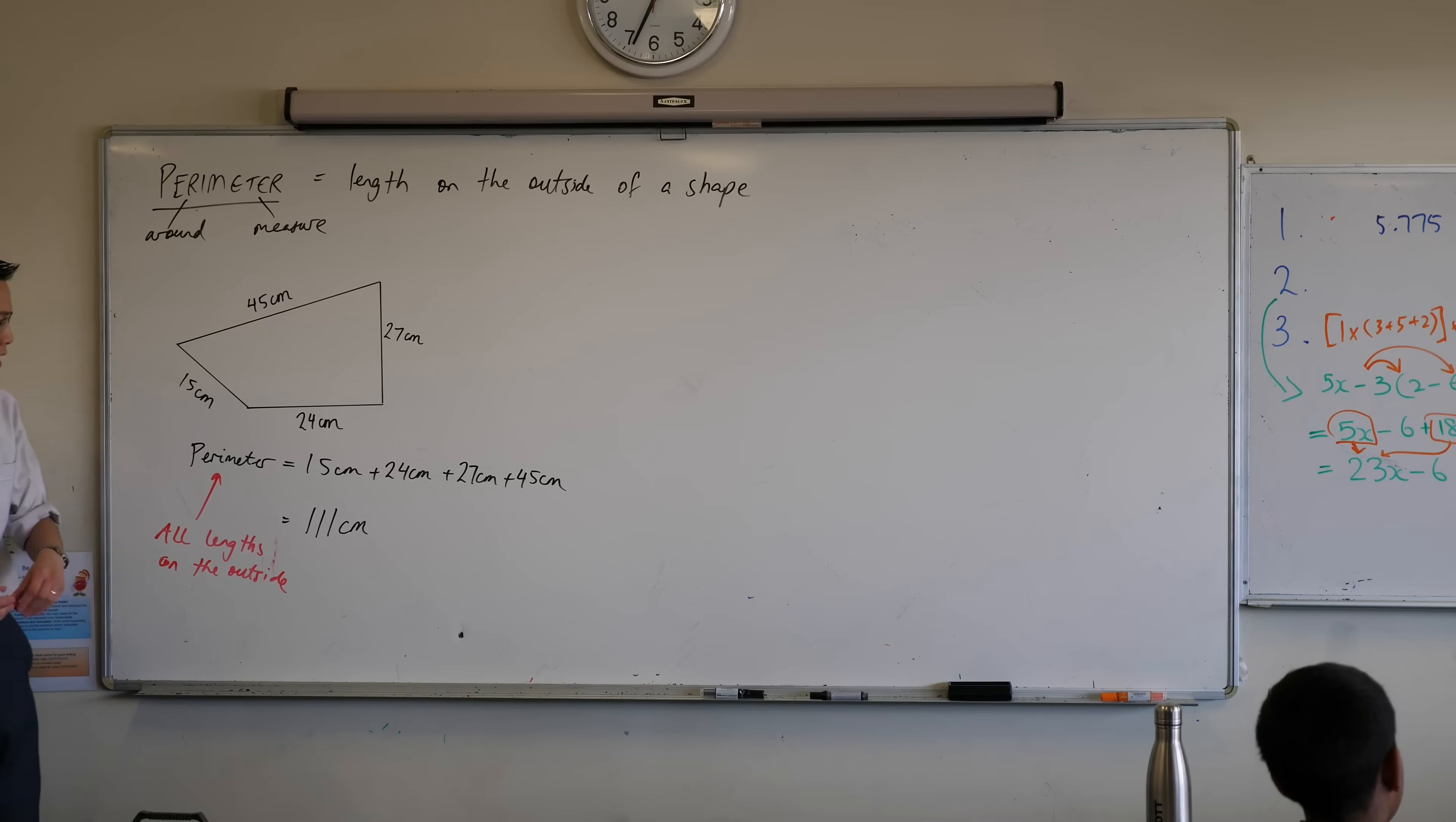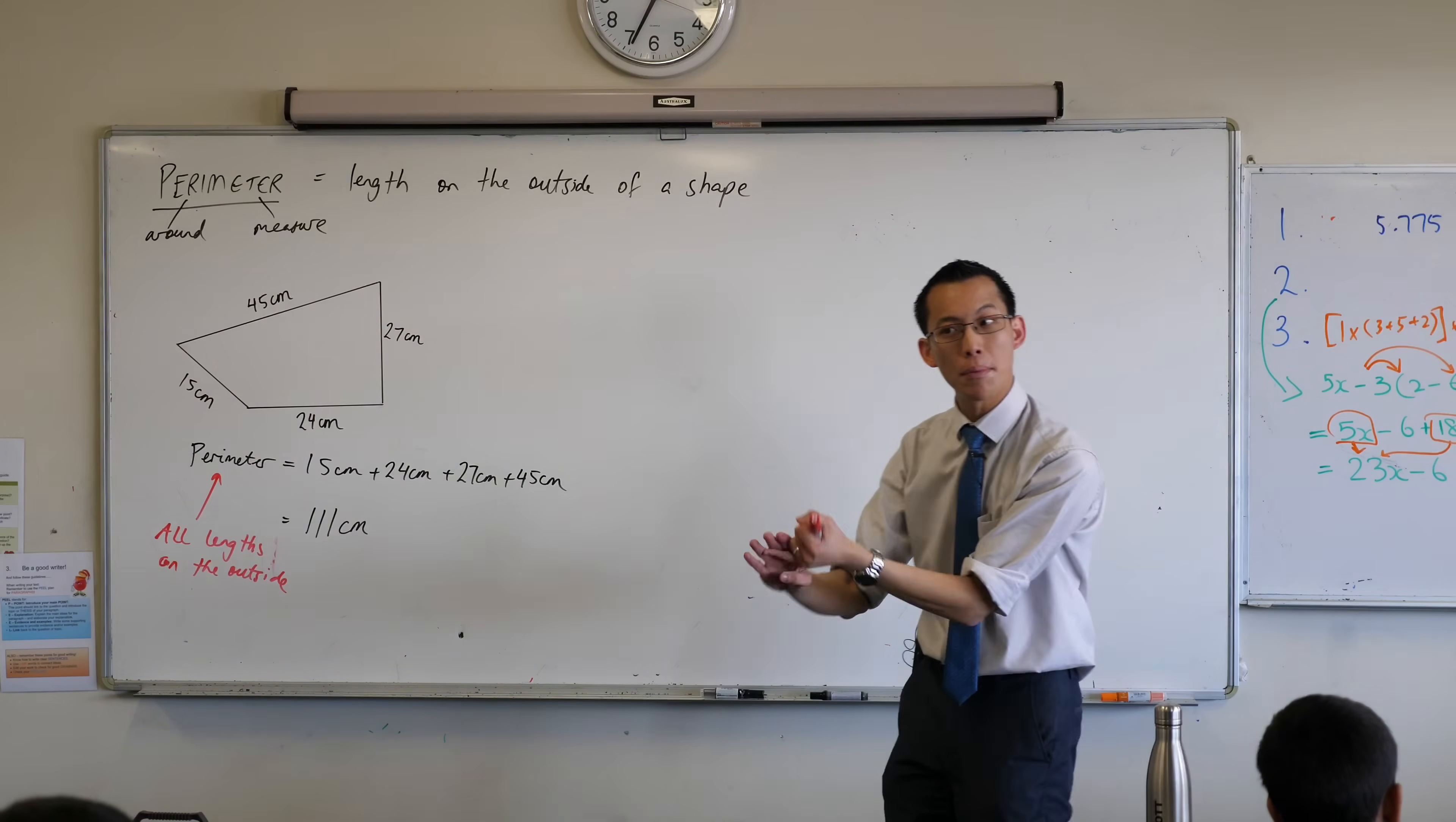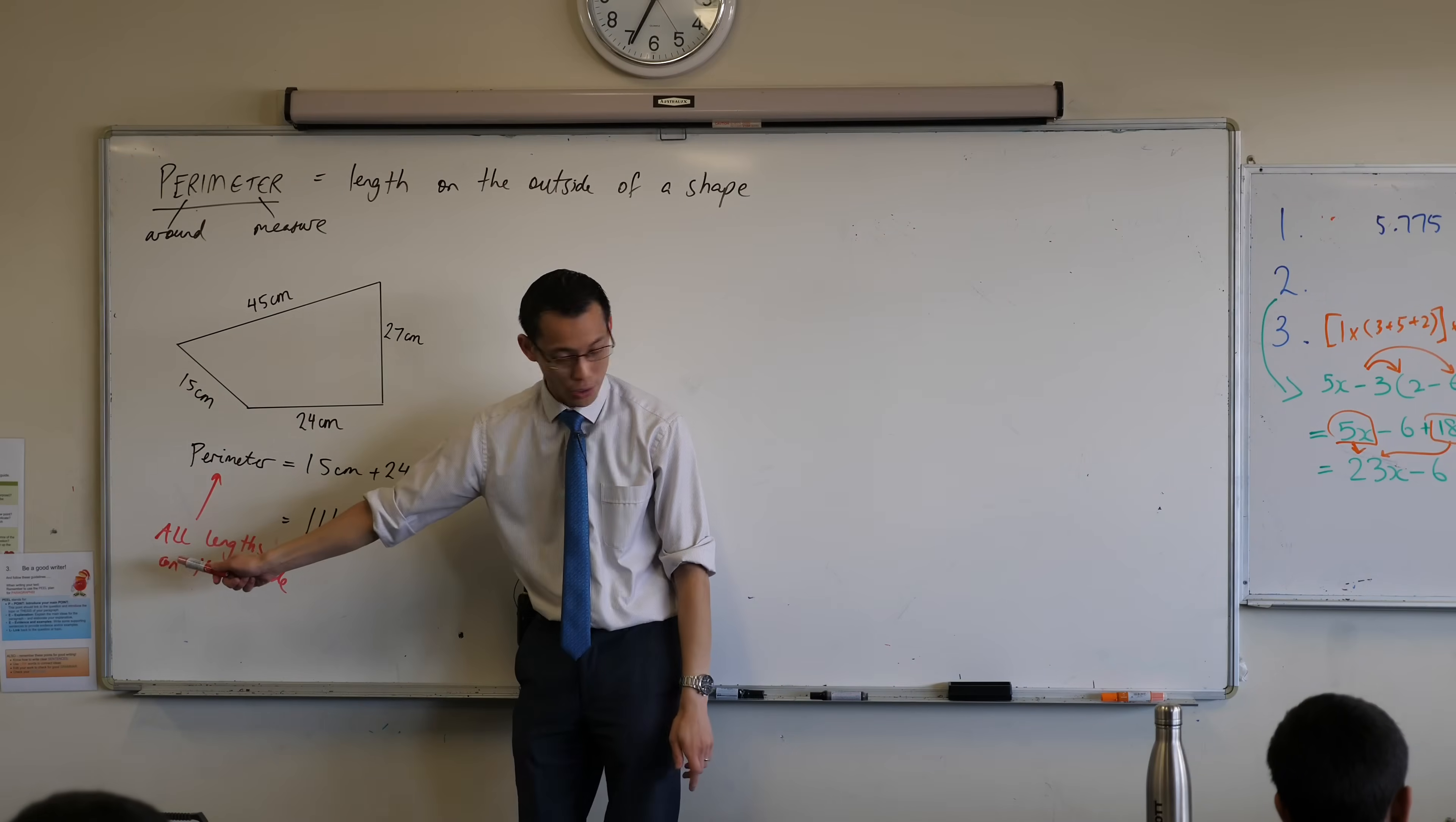Now, that means, sometimes, if for example, you don't have all the lengths, it won't do just to add all the numbers that you can see to have the perimeter. You really need every single number there. You're going to encounter some questions where they don't provide you every single length. You have to work some of them out using some of your knowledge of the properties of a shape. Maybe you're going to have to use Pythagoras, if you remember that, right angled triangles. So you need all the lengths.